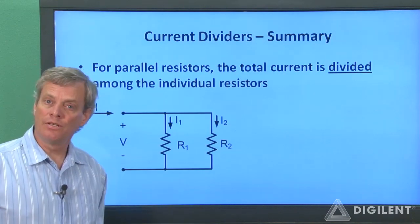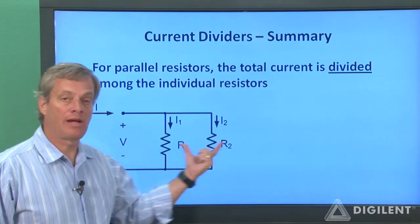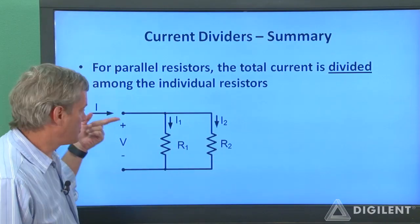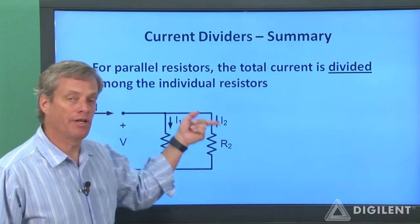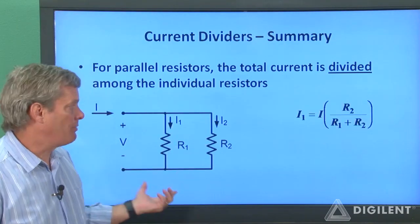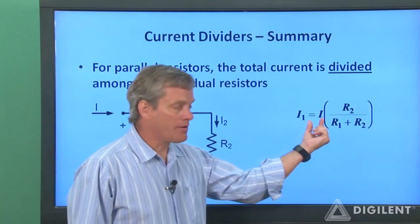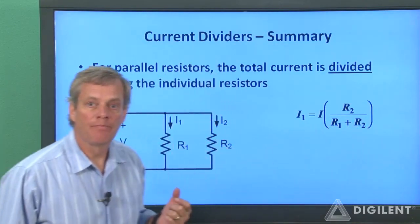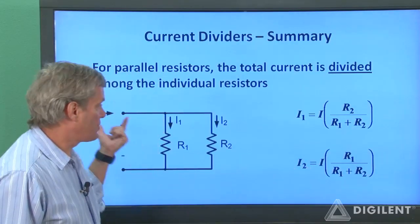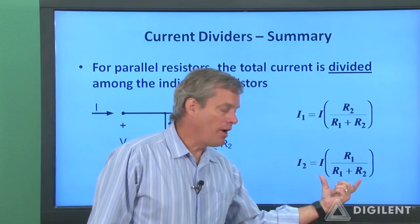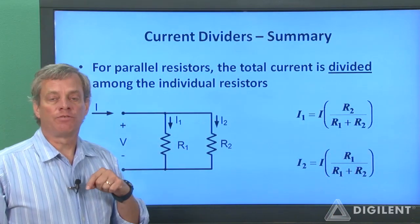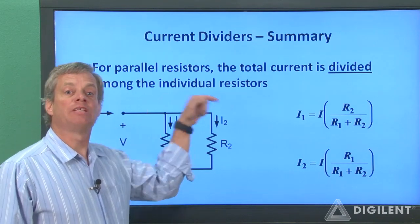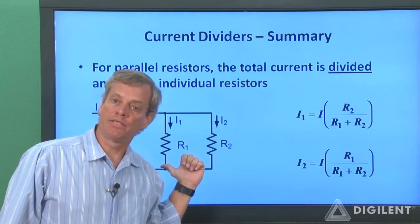In summary, the current divider formula tells us that the total current through a set of parallel resistors is divided among the individual resistors. For a pair of resistors where the total current I is known, we can easily find I1 and I2. The current I1 through resistor R1 equals I times the ratio R2/(R1 + R2), and similarly I2 equals I times R1/(R1 + R2). So for two parallel resistors, the current through one equals the total current times the other resistance divided by the sum of both resistances.